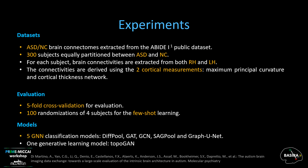We used five state-of-the-art GNNs for classification: DiffPool, GAT, GCN, SACPool, and GraphUnet. For predictive medicine, we used the TopoGAN model. Here, we display the results for all models with the ASD-NC right hemisphere dataset using the first view.